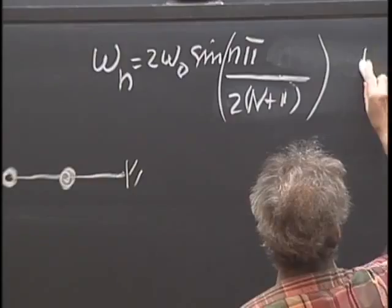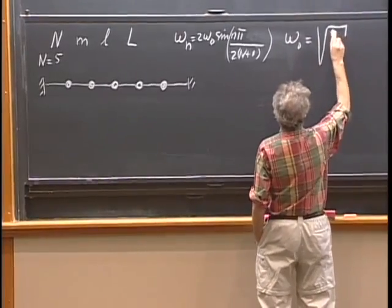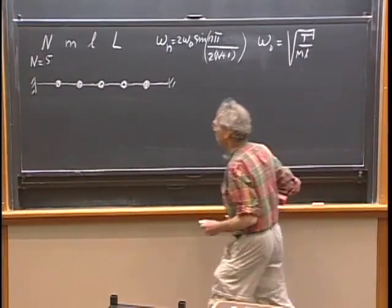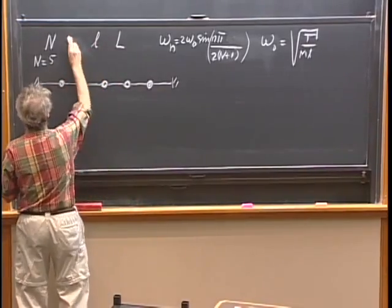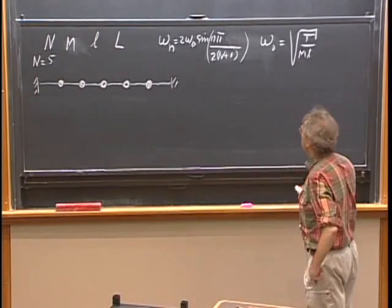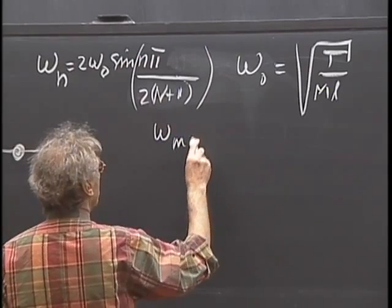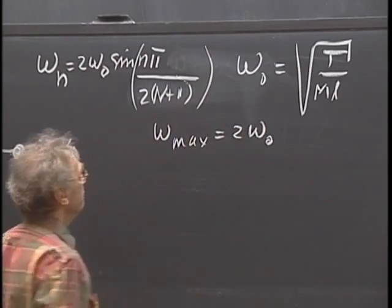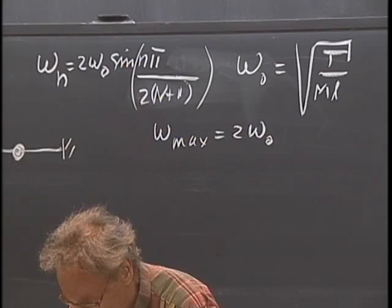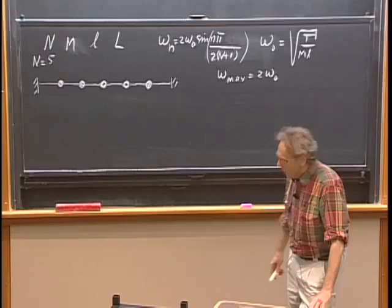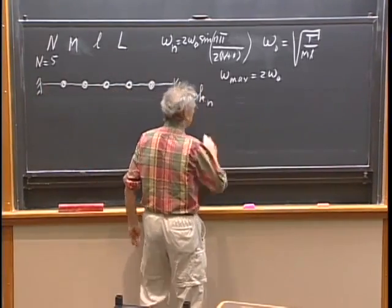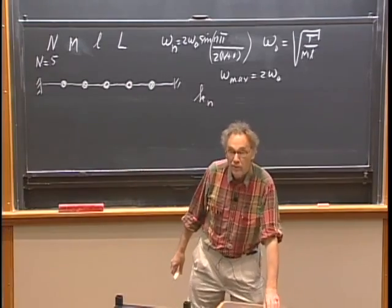Omega₀ was the square root of T divided by mL. Each one of those beads has mass capital M. You can see that the maximum possible frequency is 2 omega₀, because that's when the sine of this function equals 1. The boundary conditions — fixed at both ends — demand certain allowed values of k_n.